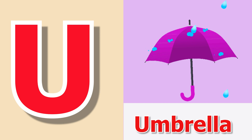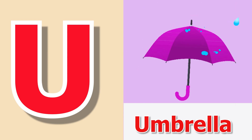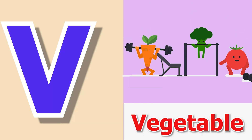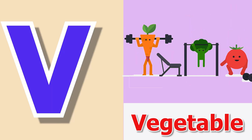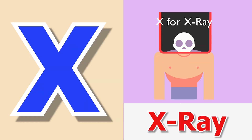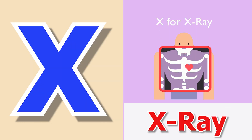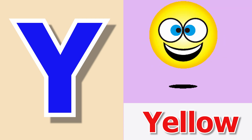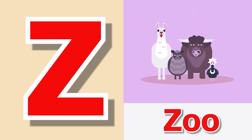T for Tree, U for Umbrella, V for Vegetable, W for Watch, X for X-Ray, Y for Yellow, Z for Zoo.